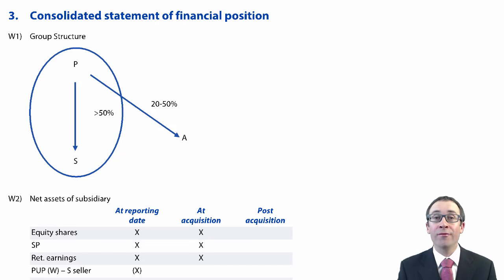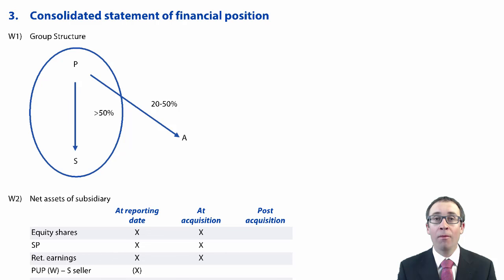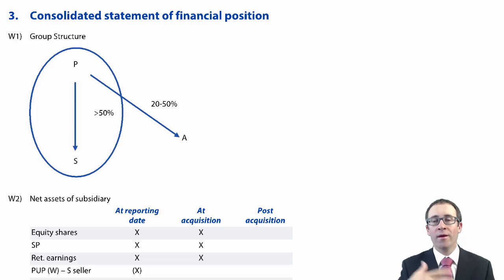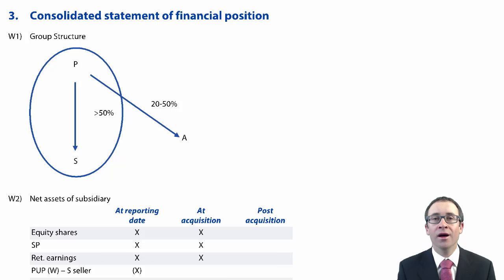Let's go through and recap the workings that you've seen from the glory days of F7 — the workings from the group statement of financial position. This is going to be the focus for the next few videos before we then move on to the statement of profit or loss and OCI a little bit later on.